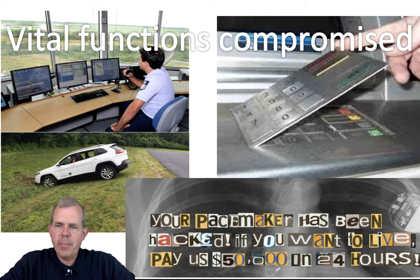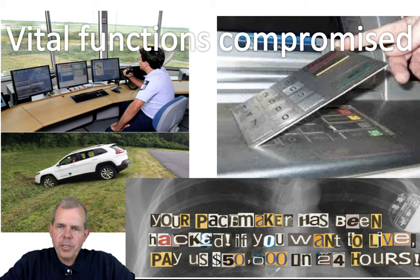Take a look with me at these four pictures of computer systems. We have an airline traffic controller, a bank machine, a car, and a pacemaker. All of them have something in common — they're all controlled by computers. And as you can see, each of them are extremely vulnerable and have disastrous results.